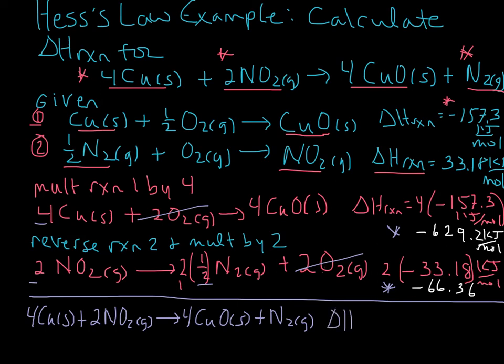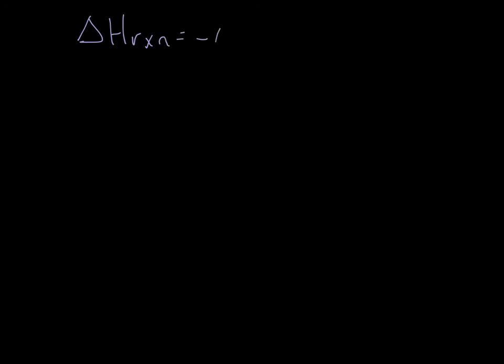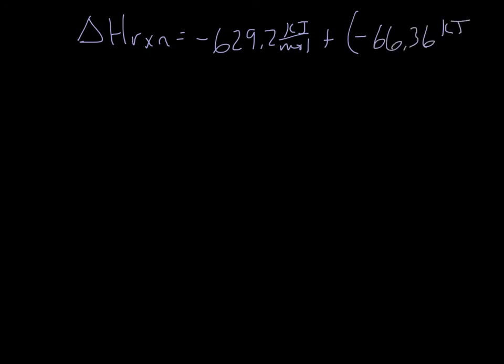Our final step is to add the two individual delta H values together. So delta H for the target reaction is negative 629.2 kilojoules per mole plus negative 66.36 kilojoules per mole, which of course is like subtracting. That gives us a final answer of negative 695.56 kilojoules per mole.